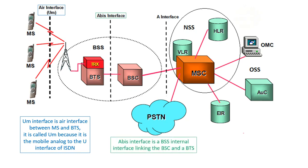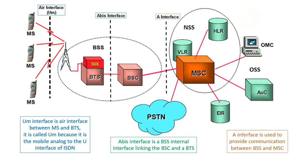Next is the ABIS interface — a BSS internal interface linking the BSC and the BTS. Next is the A interface, which is used to provide communication between BSS and MSC. In summary: the UM interface is between MS and BTS, the ABIS interface is between BTS and BSC, and the A interface is between BSC and MSC.